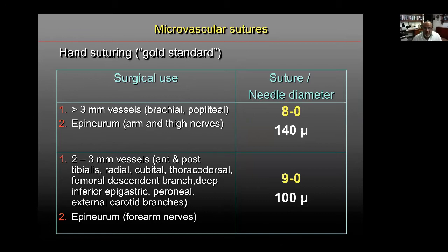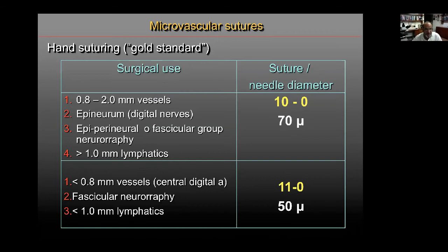There are many microvascular sutures manufactured in different sizes depending on thread and needle diameter, ranging from 8-0 to 12-0. The most commonly used is 9-0 because most vessels are two to three millimeters in diameter. These are also useful for nerve repair. Smaller sutures are used for vessels 0.8 to 2 millimeters and smaller nerves such as digital ones, and some sutures are used for lymphatics. 11-0 is used for vessels smaller than one millimeter.